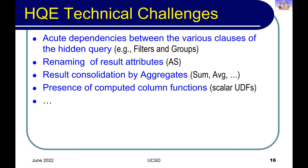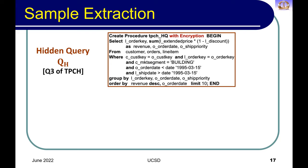Is this a simple problem? It's actually not, because there are dependencies between the various clauses of the hidden SQL formulation — for example, between filters and groups. You may also have renaming of result columns via the AS operator, result consolidation through aggregate functions like sum and average, computed column functions like discounts or profits, and scalar UDFs. So these are some of the difficulties here.